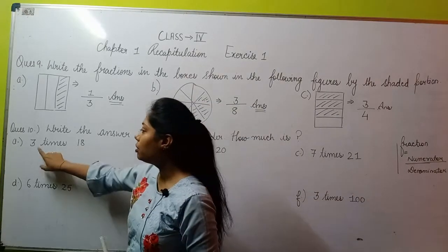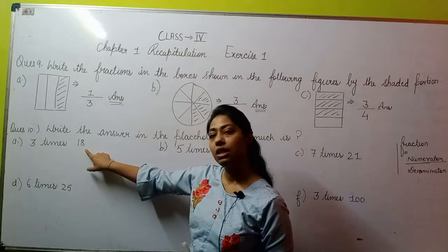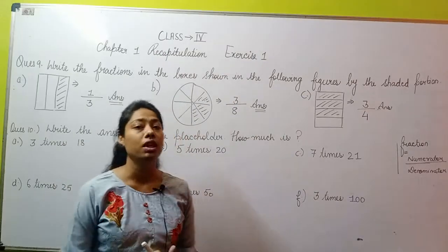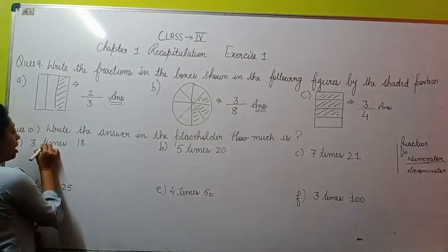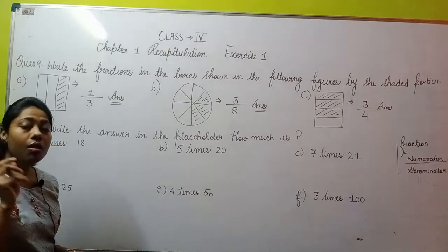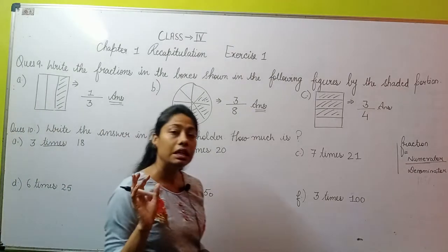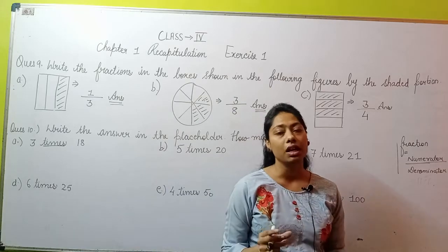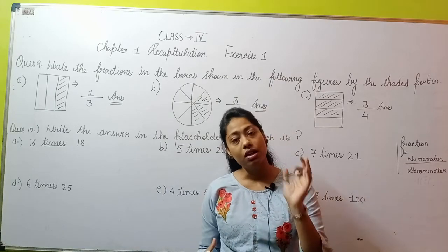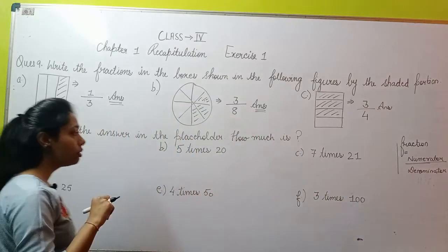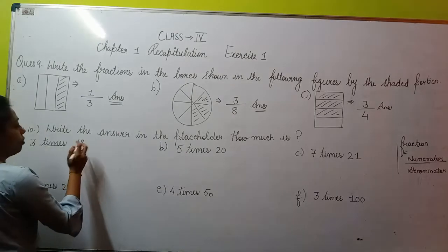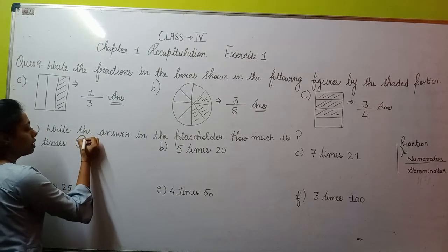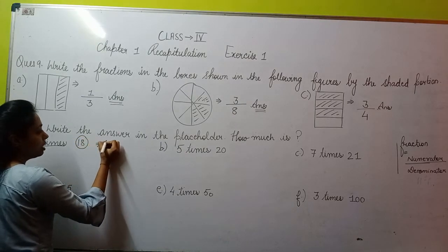Now see, in part A, it's given as 3 times 18. This word 'times' means that in this question you have to multiply. From this word 'times' we understand what calculation to do: multiply. What to multiply with what? You have to multiply 18. By what? By 3.